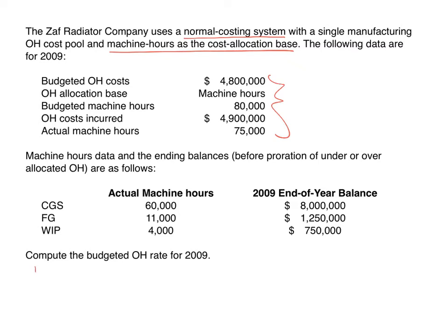The first thing we do — always our first step — is to calculate our overhead rate: estimated overhead divided by estimated allocation base. Our estimated overhead is $4,800,000 and our estimated machine hours are 80,000. That gives us a rate of $60 per machine hour.